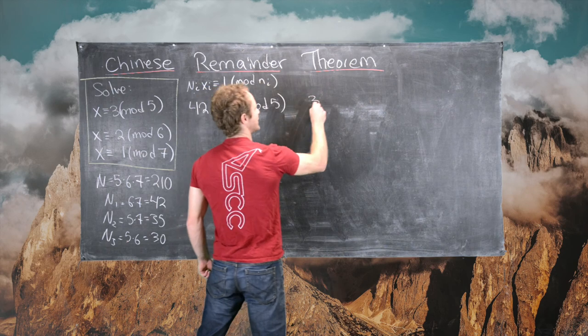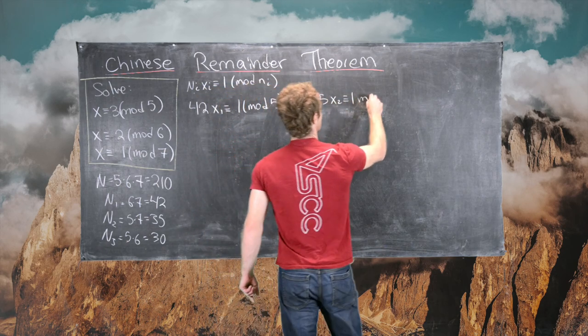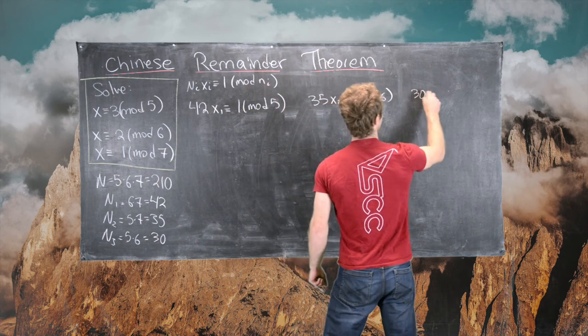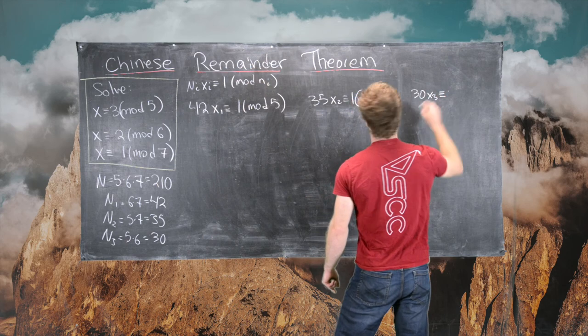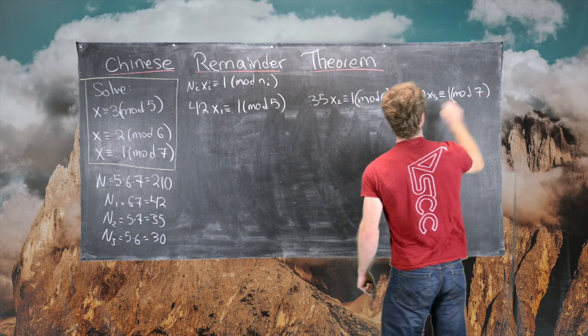We need to do 35 X2 is congruent to 1 mod 6, and finally, we need to do 30 X3 is congruent to 1 mod 7.